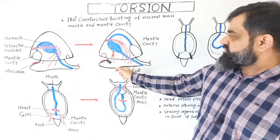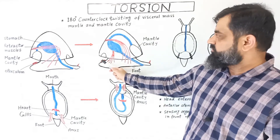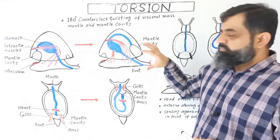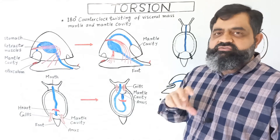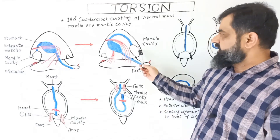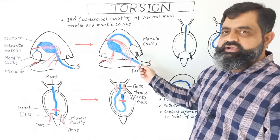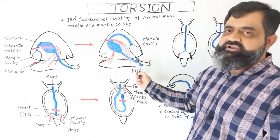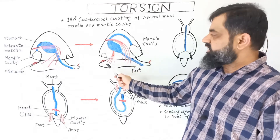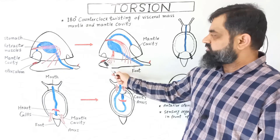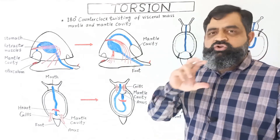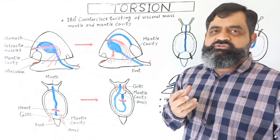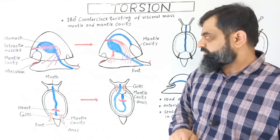This is the foot and this is the operculum. After torsion, when the animal retreats inside the shell, because the mantle cavity is now on the anterior side of the body, the head will enter the shell first. Later the foot will enter, and after that the operculum will close the shell to avoid desiccation and to keep the animal safe from predators.